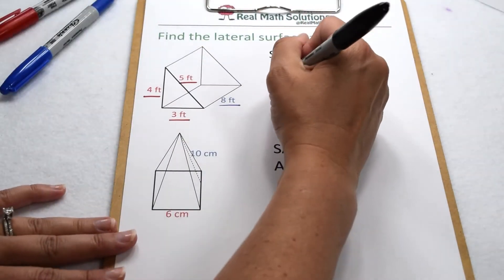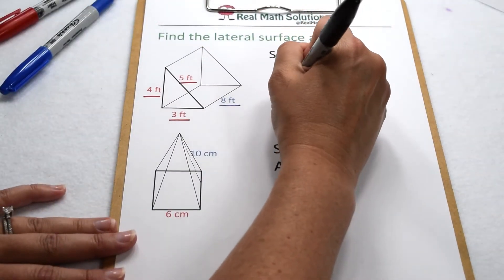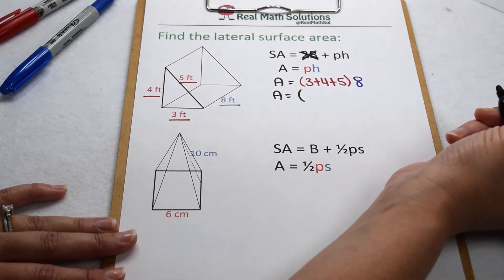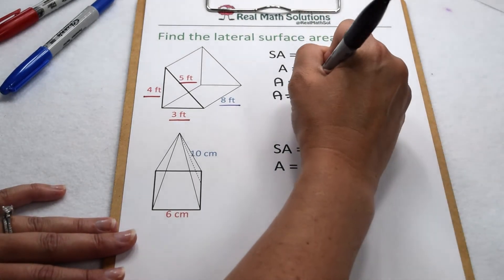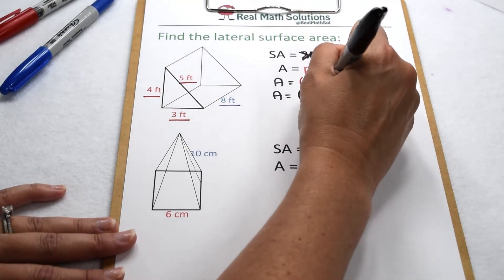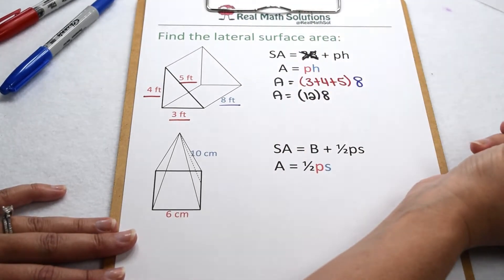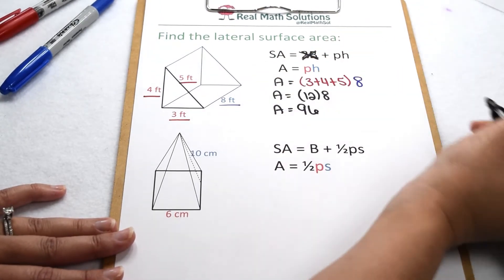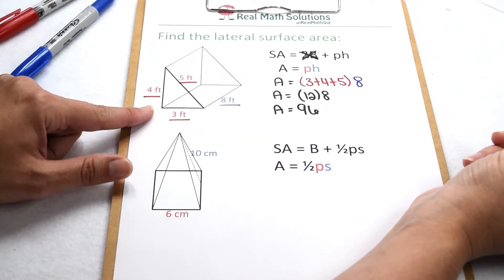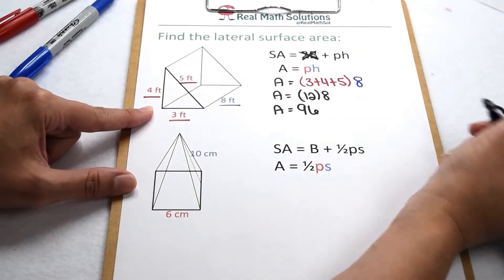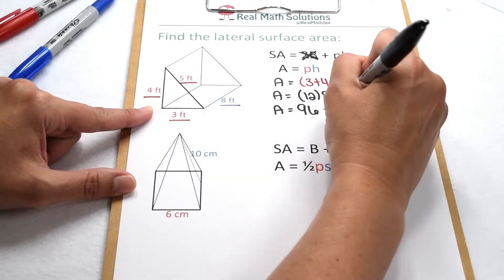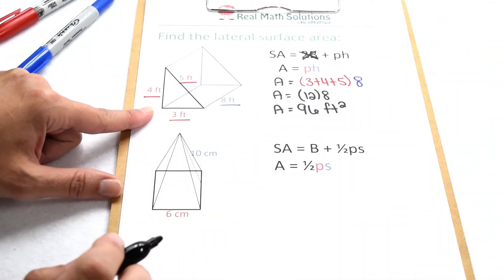Now we can use order of operations. Inside the parentheses, 3 plus 4 plus 5 gives me a total of 12. Multiply that times 8 — 12 times 8 is 96. So the lateral surface area for this triangular prism comes out to be 96 square feet.